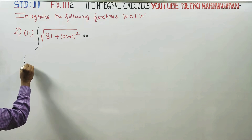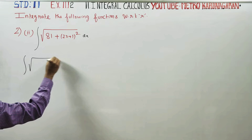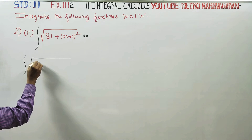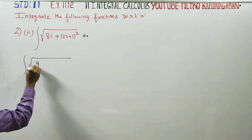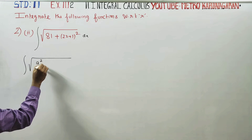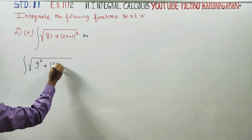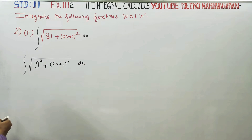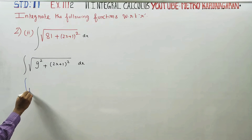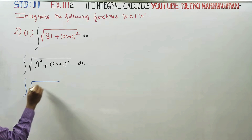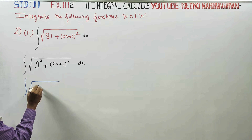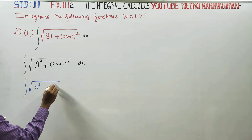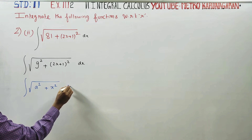Integration of square root of 81 — that is 9 squared — plus (2x + 1) whole square, dx. In this sum, one ready-made formula also matches: square root of a square plus x square also matches.